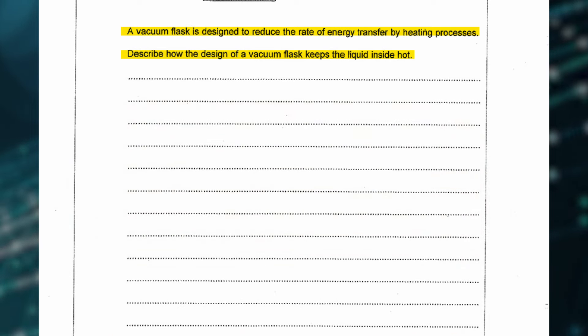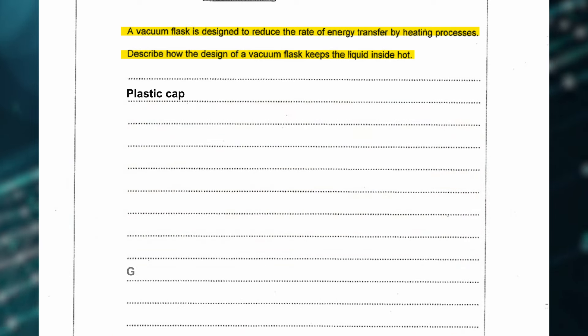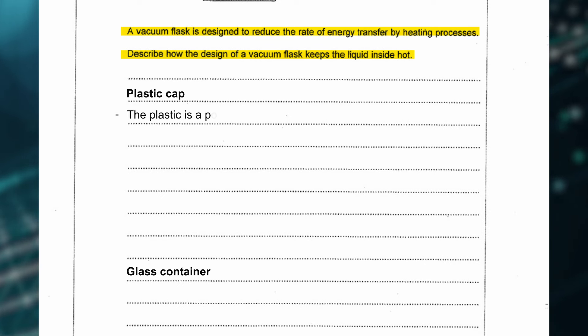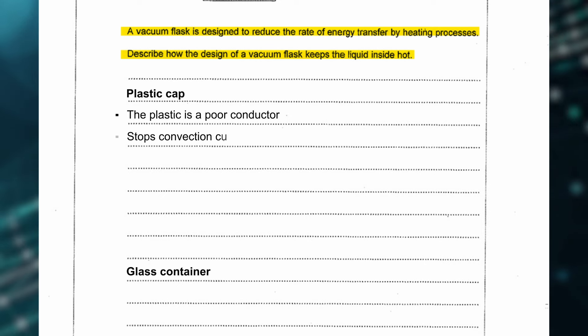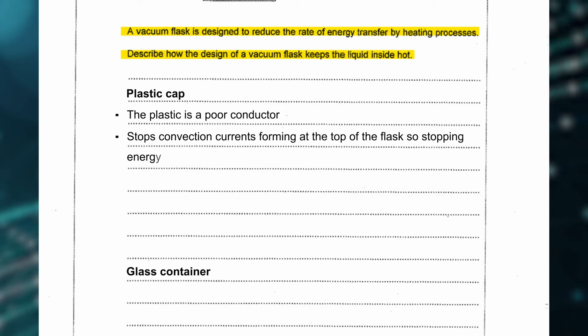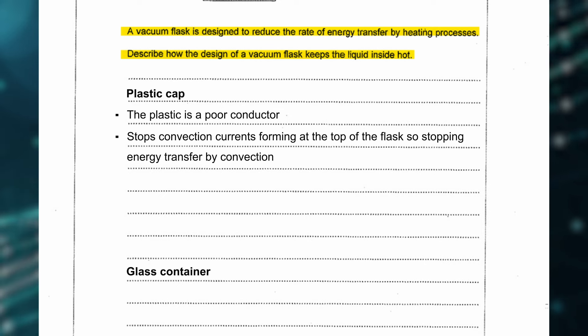The mark scheme has split the features into two: the plastic cap and the glass container. For the plastic cap, it wants you to say that plastic is a poor conductor, and that it stops convection currents forming at the top of the flask, so stopping energy transfer by convection.